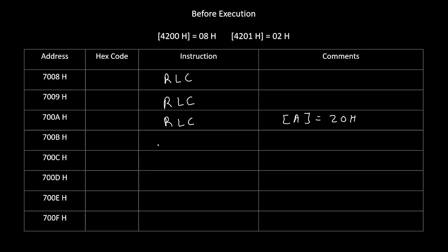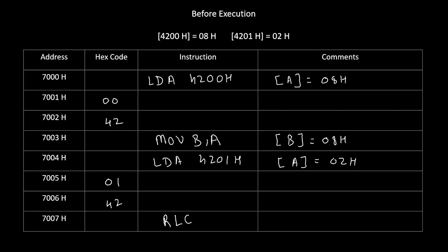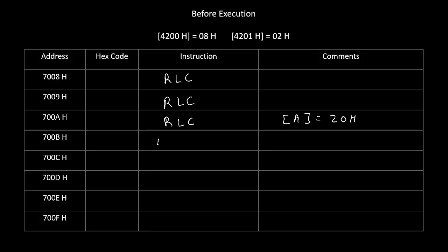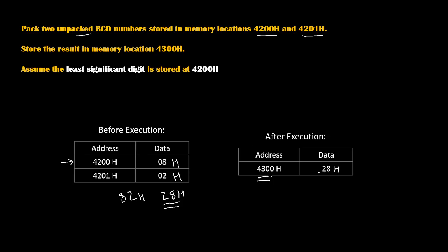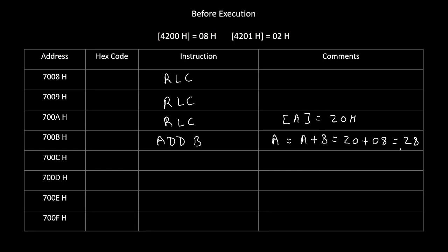Now we will add the value of the B register to the accumulator. Before execution, the B register was 08H. Therefore we write instruction ADD B. Because of this, the new value of accumulator becomes accumulator plus B. The accumulator was 20H and content of B register was 08H, so the new value of accumulator becomes 28H. That is exactly what was required — we expected 28H and we got 28H.